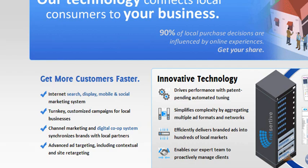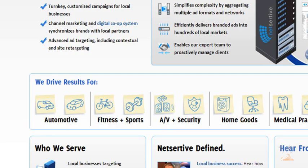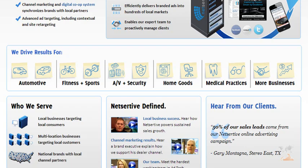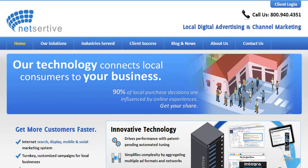On the homepage we can see that they say get more customers faster — internet search, display, mobile and social marketing system, turnkey customized campaigns for local businesses, channel marketing and digital co-op system, and advanced ad targeting. I'm going to go over specifically what they offer so you can get a good idea of whether this service has the comprehensive plan you're looking for.